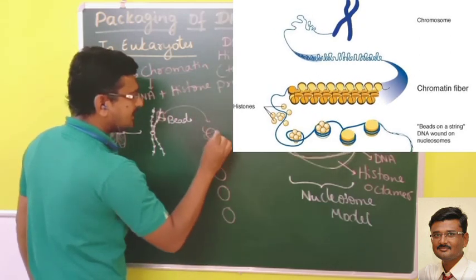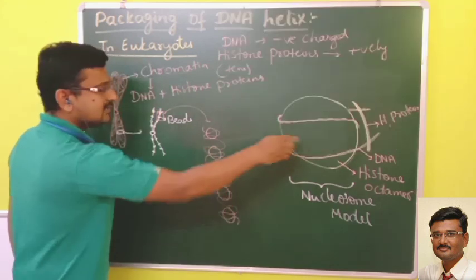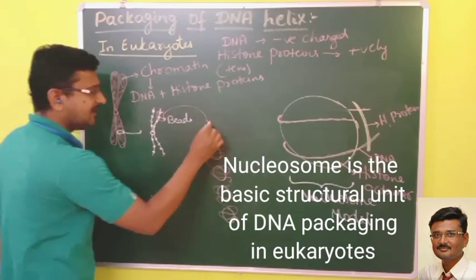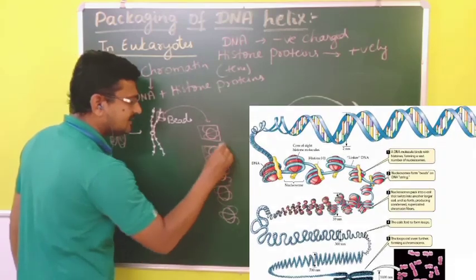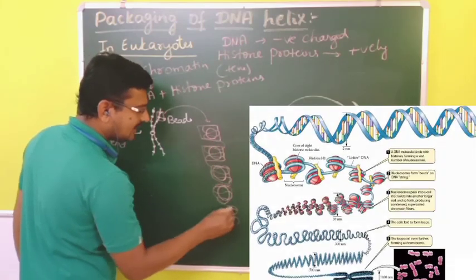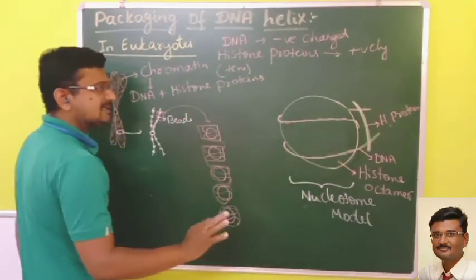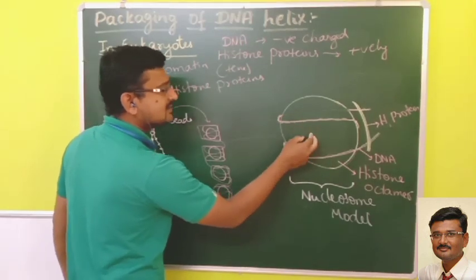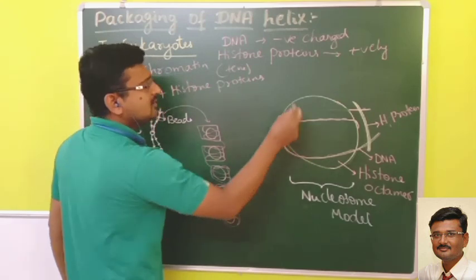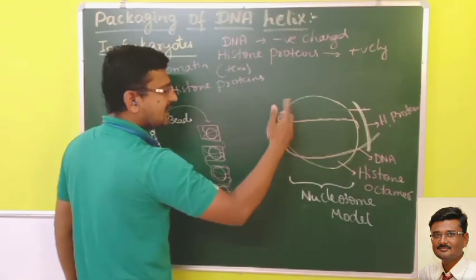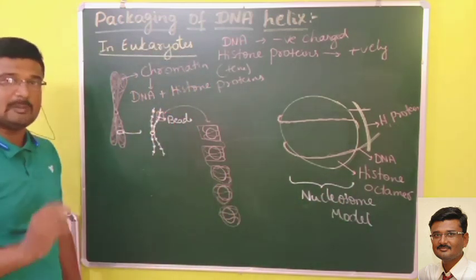You will find the DNA coiled in these structures, with many nucleosomes present. A nucleosome is formed when positively charged histone proteins are surrounded by negatively charged DNA coiled around them. Together, the negatively charged DNA and positively charged histone proteins form what we call a nucleosome.